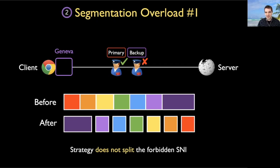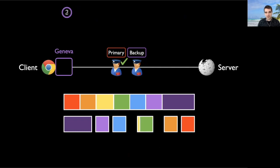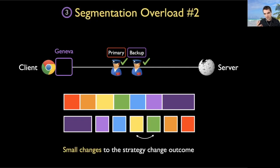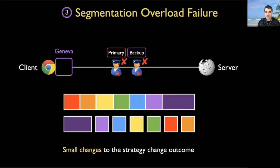I want to point out that this SNI field is not split across multiple segments — it remains intact in plain text in one segment towards the front. What's strange is that small changes can have a big impact. For example, Geneva discovered that if we change the order of just two segments — the green and yellow — the strategy now defeats both middleboxes with 100% reliability. At the same time, if we reverse the order of the orange and red segments, the strategy defeats neither. We've examined over 100 instances of these segmentation order strategies and we still do not fully understand why they work.